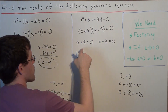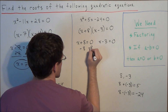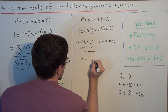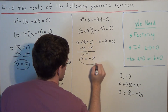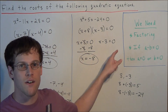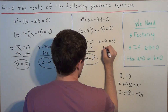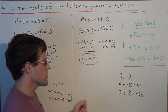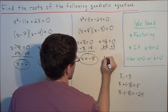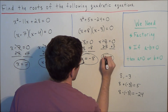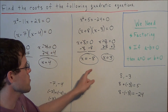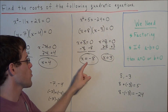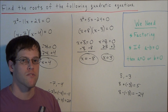So now we solve the first case by subtracting 8 from both sides. We have 8 minus 8 cancels, so x is equal to negative 8. This is one of our solutions. And to solve the second case, all we need to do is add 3 to both sides. Negative 3 plus 3 cancels, so x is equal to positive 3. So the solutions to the second question, x squared plus 5x minus 24 equals zero, are x equals negative 8 or x equals positive 3.